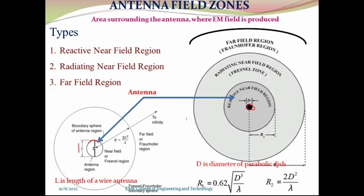The antenna radiates signal around 360 degrees. In this region, I have split into two major categories. One is, up to this range is called as near field, then after this range is called as far field. From this near field, we have further classified into reactive near field up to this distance whose radius is R1. After this range, from this region to the starting point of far field, is called as radiating near field region.